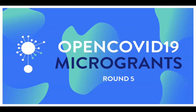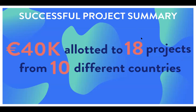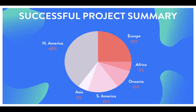Open COVID-19 micro grants round five. As a summary, we've decided to allocate 40,000 euros to 18 projects coming from 10 different countries. This is our biggest round so far — at least twice as big as the previous ones — also because the quality of the projects was excellent. We really followed the evaluations you made of the different projects and applied the same cutoff as before. The projects are fairly well distributed globally — North America, Europe, Africa, Oceania, South America, and Asia. We're really happy to have projects from all continents.